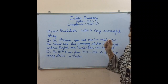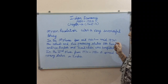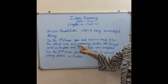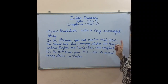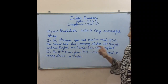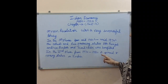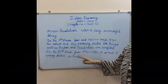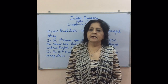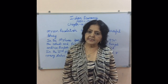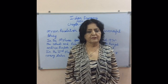In the first phase, from mid-1960s to mid-1970s, wheat and rice producing states like Punjab, Andhra Pradesh and Tamil Nadu benefited. In the second phase, from 1970 to 1980, it spread to many states in India and brought change in the agricultural sector. India became self-sufficient in food production.